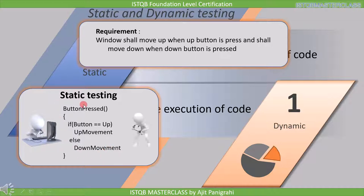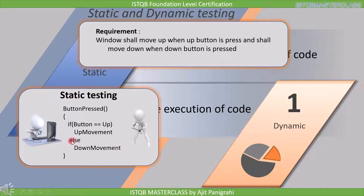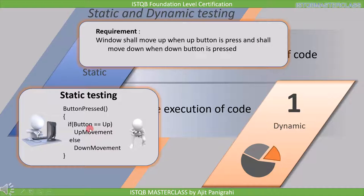Our task as a tester is to check whether this piece of code is satisfying the requirement or not, and this type of testing is known as static testing. Here it says if up button is pressed then move up, but if up button is not pressed then move down. If you execute this code the window will never stop moving — it will move up when the up button is pressed, but the moment you release the button it will start moving down. This means this piece of code is not fulfilling the requirement, and this is how we find a defect through static testing.